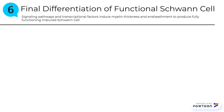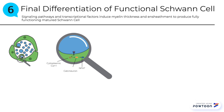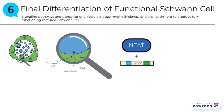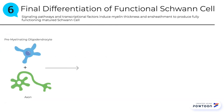The last step of this process is the final differentiation of functional Schwann cells. This involves signaling pathways and transcriptional factors to induce myelin thickness and ensheathment to produce a fully functioning matured Schwann cell. The cyclic AMP pathway enhances neuregulin to increase the cytoplasmic calcium inside the mature Schwann cell. The increased calcium levels activate calcineurin and NFAT. NFAT then works with SOX10 to activate KROX20. KROX20 then further increases the amount of neuregulin inside the mature Schwann cell. The increased neuregulin from KROX20 activates the GPCR signaling pathway, which recruits premyelinating oligodendrocytes. The oligodendrocytes ensheath the axon and help thicken it to form the fully functioning Schwann cell.